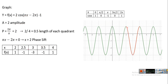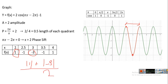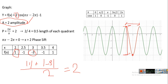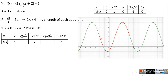Regarding amplitude: the highest elevation is 1 and the lowest is minus 3. Adding in absolute value: |1| + |−3| = 4, divide by 2 = 2. So the amplitude is 2, which confirms our coefficient. We need to know this because amplitude questions may appear in assessments.